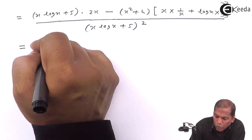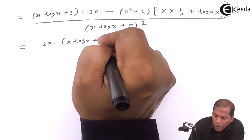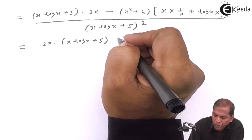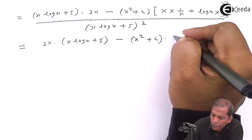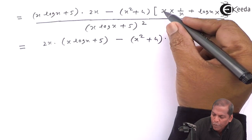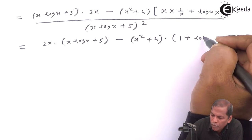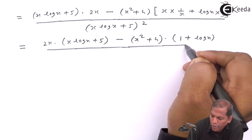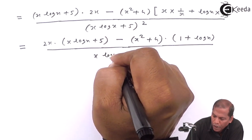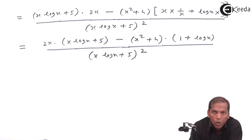So this equals 2x into (x into log x plus 5), minus (x squared plus 4) into — we cancel x from numerator and denominator — so we are left with (1 plus log x). The whole thing is divided by (x into log x plus 5) whole bracket squared. So this is the required solution for the given problem. Thank you.